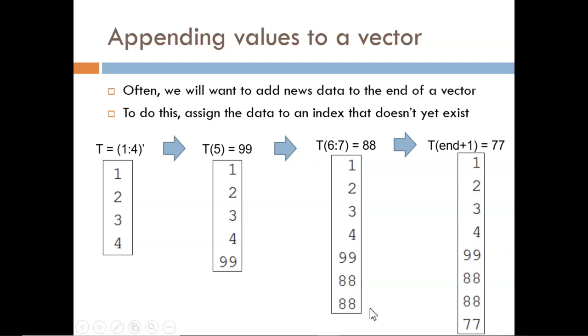But normally, it is not convenient to keep track of how long a vector is. A more efficient technique is to take advantage of end. Here, I select the index as end plus 1. So then, the vector gets extended by one more index relative to the current length.